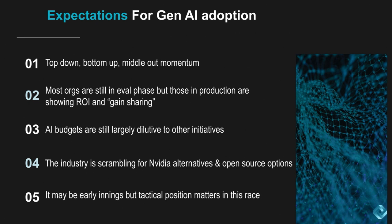Most organizations are still in the evaluation phase, but those that are in production are showing ROI and using the concept of gain sharing. This is important because AI budgets are still largely dilutive to other initiatives. There's some R&D and innovation budgets paying for Gen AI experimentation, but generally IT budgets are not rising dramatically. Gen AI is new, and new means we've got to figure out where to get the budget from elsewhere, and it's not paying off enough yet to justify itself except in those cases where companies have shown ROI.